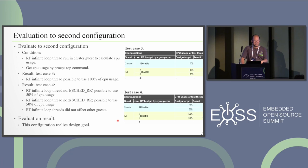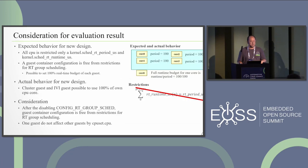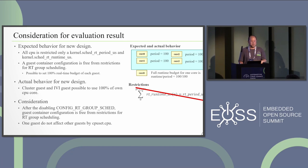The evaluation results show this configuration realizes our design goal. Expected behavior for the new design: all CPUs are restricted only by the kernel scheduler RT payload and scheduler runtime microsecond settings. The guest container configuration is free from restriction of RT group scheduling — meaning it is possible to set 100% real-time budget for each guest container. Actual behavior: cluster guests and other guests can use 100% of their own assigned CPU cores.